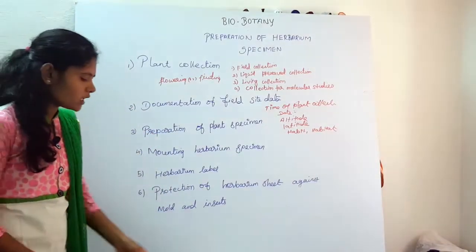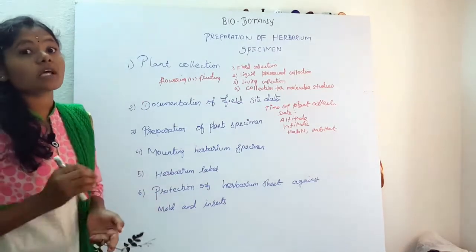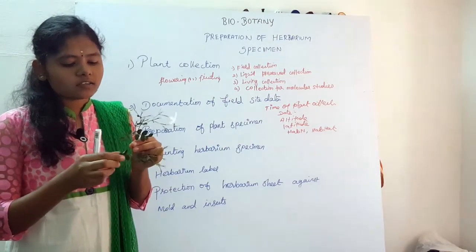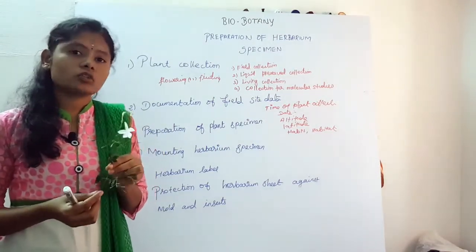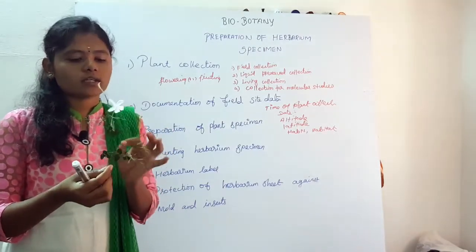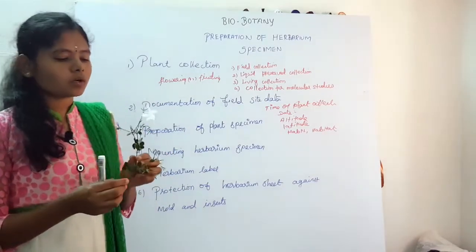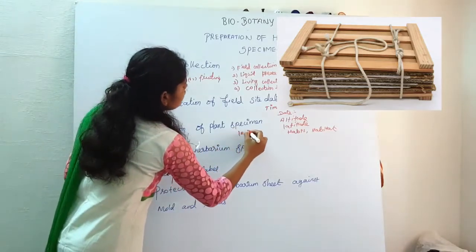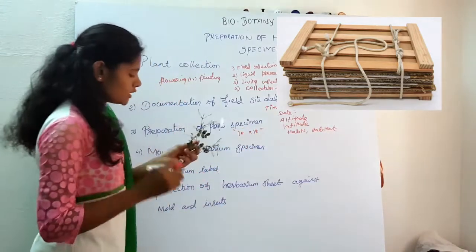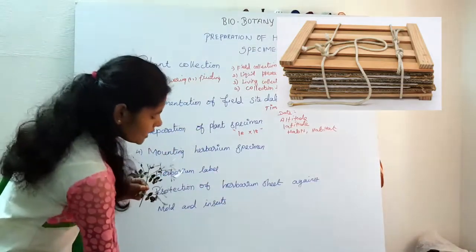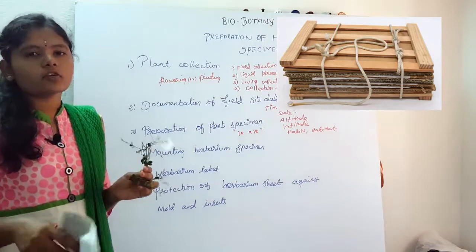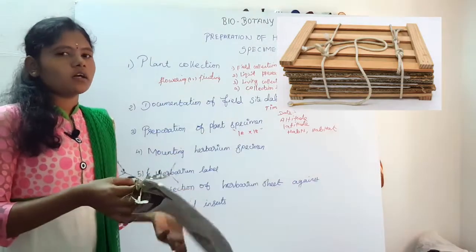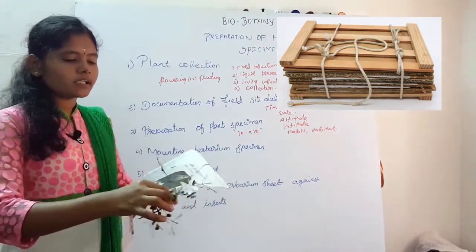Third, preparation of plant specimen. After collecting the plant, press it immediately. If you click — that is, press — the plant, the flowering will be preserved. The leaves can be added around the flowering. You should immediately press the plant using a plant press. The standard size required is 12 to 18 inches. All plant material is pressed between alternating layers of newspaper, which is easily available.